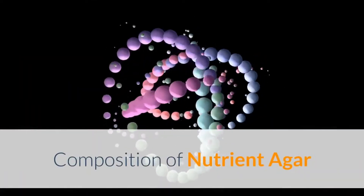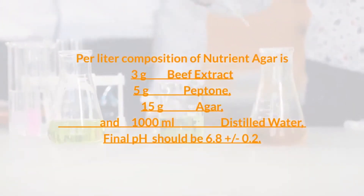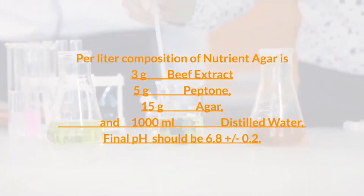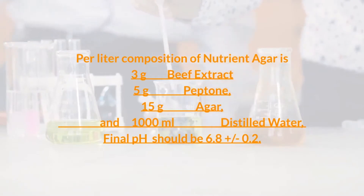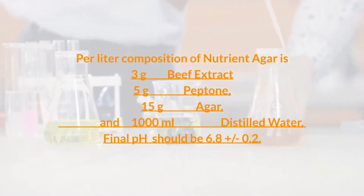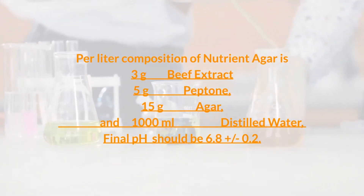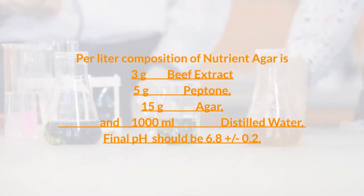Composition of nutrient agar. Per liter composition of nutrient agar is 3 grams beef extract, 5 grams peptone, 15 grams agar, and 1,000 milliliters distilled water. The final pH should be 6.8 plus or minus 0.2.